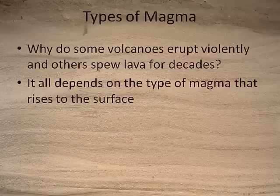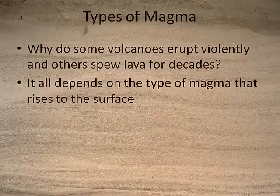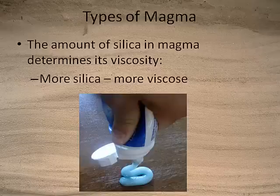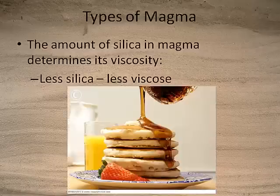Why do some volcanoes erupt violently and others spew lava gently for decades? It all depends on the type of magma. When we talked about igneous rocks, we discussed a type of magma that was high in silica and low in iron — that magma was felsic. Felsic magmas have lots of silica and are very viscous. If a magma had less silica, it would be more runny and less viscous.